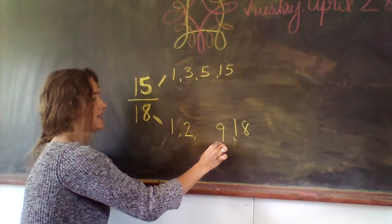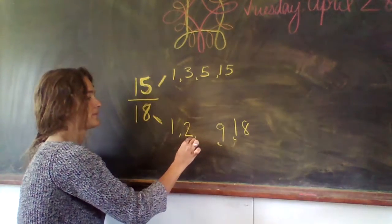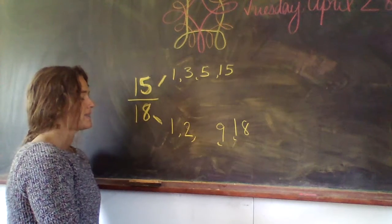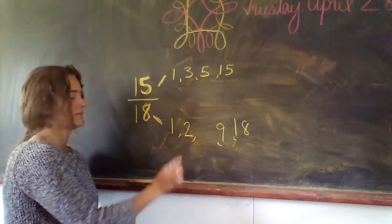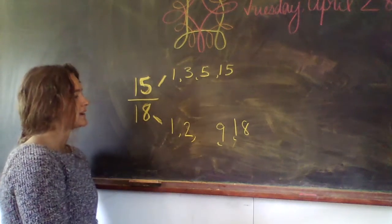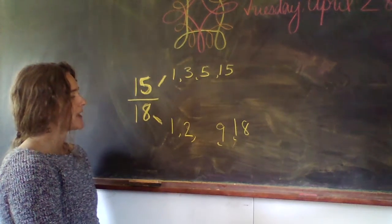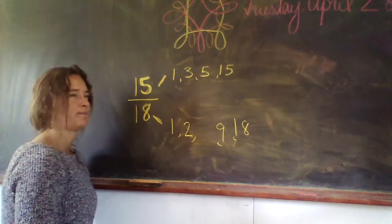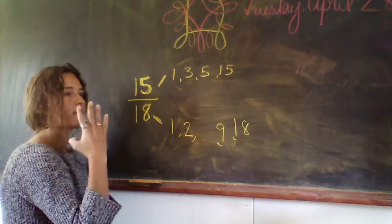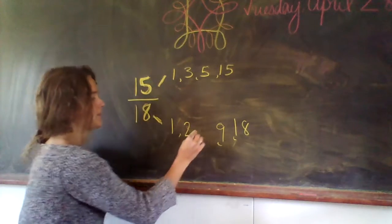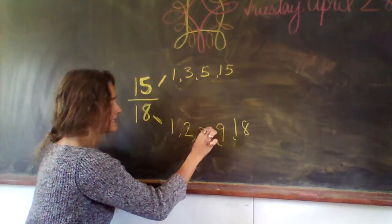2 times 9 is 18. And then I think I'm missing something else. What else goes into it? 3, 6, 9, 12, 15, 18. 3 and 6.